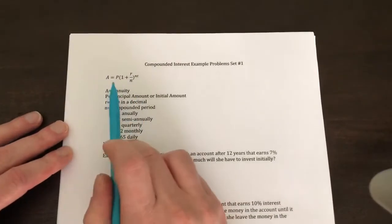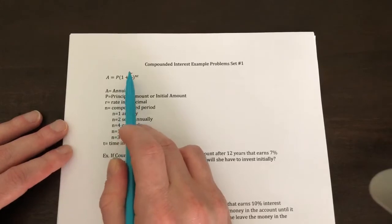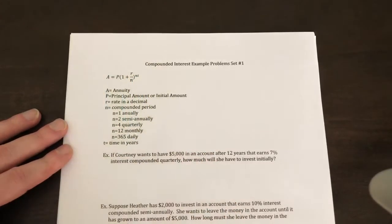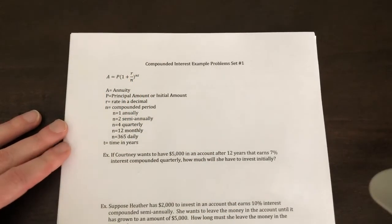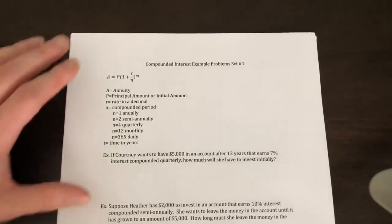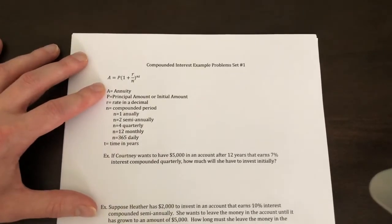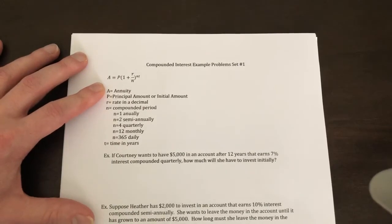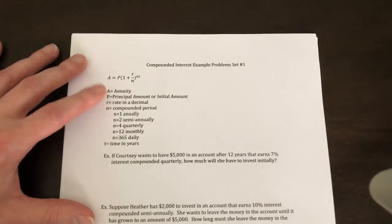So your formula that you're going to use is A = P(1 + R/N)^(NT). You're going to use this for when money is growing at a certain rate. The A stands for the annuity or the future worth, what it's worth after you've left it in the bank account for so long. P is the principal amount or the initial amount.